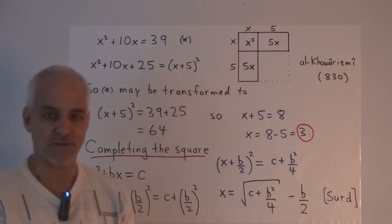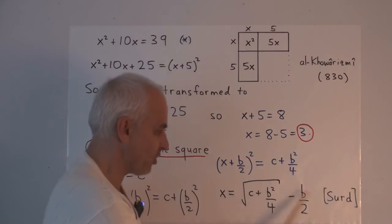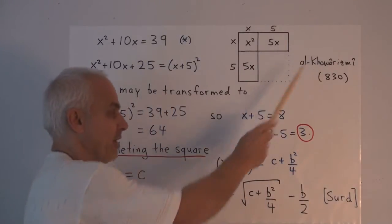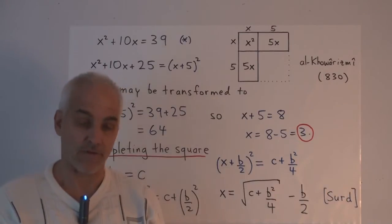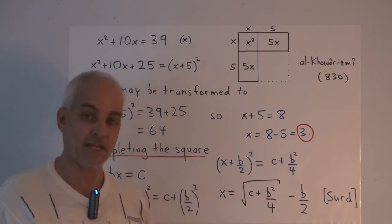So we're introducing this third notation for the square root that was an innovation also due to the Arabs. So for example, the square root of 16 is 4, the square root of 25 is 5, and so on.